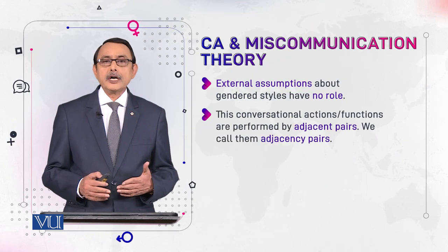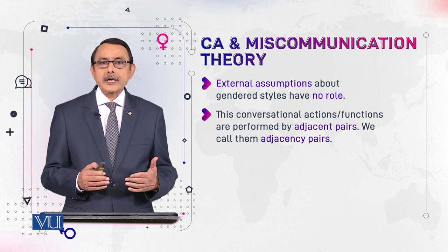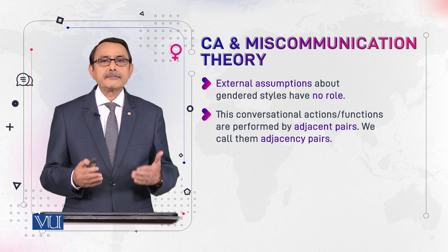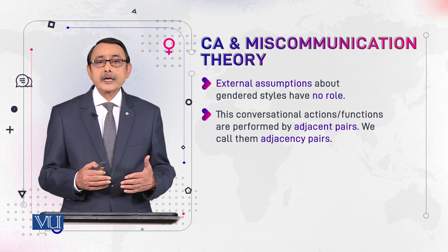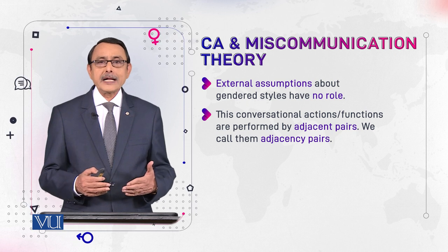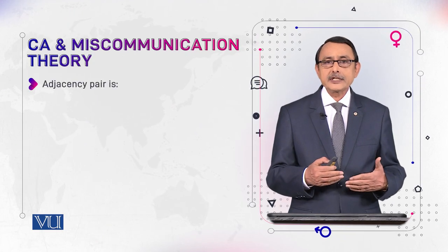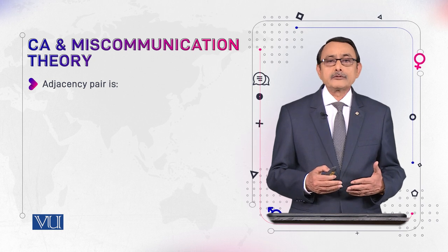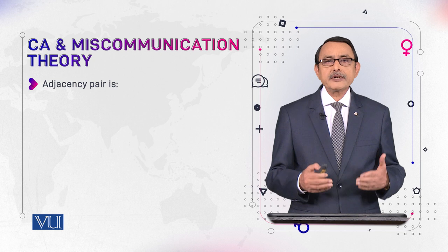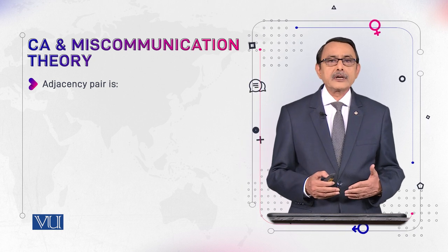These conversational actions or functions are performed by adjacent pairs. The first utterance is uttered by speaker A and the second by speaker B — two different speakers produce these two utterances. Together, the pair of utterances makes the function of the interaction. Such pairs are adjacent to each other, with one coming soon after the other, so we call them adjacency pairs.